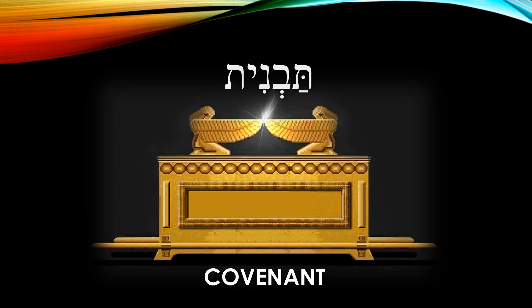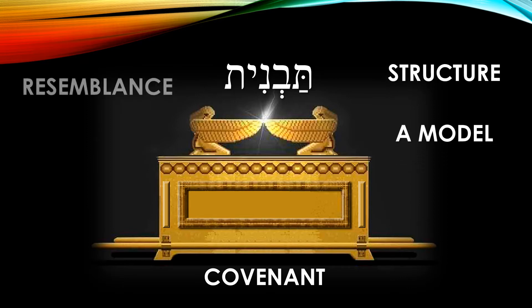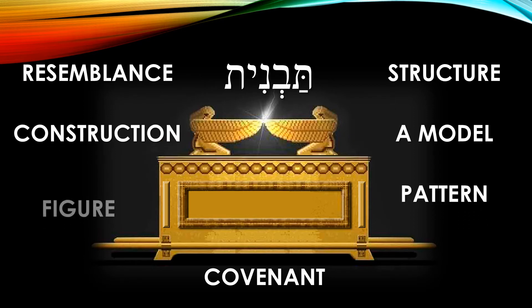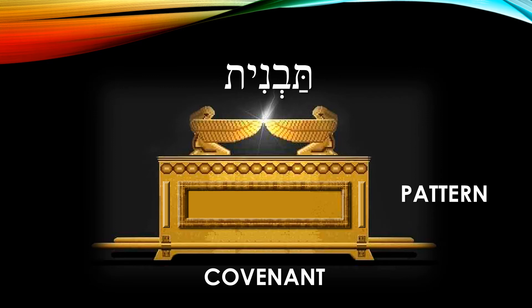Let's look at this word, Tavnith — Strong's number 8403 — from Banah. It means structure, and by implication: a model, resemblance, construction, pattern, figure. The first time that Tavnith is used is in Exodus chapter 25 verse 9. This is the pattern of the Tabernacle and all of its furnishings, including that of the Ark of the Covenant.